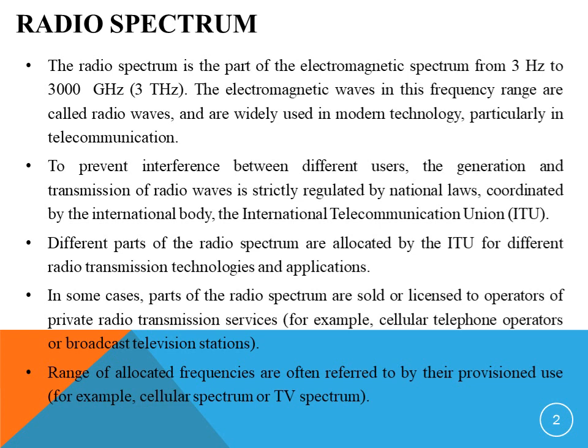ITU has control over the radio spectrum. They allocate spectrum for different applications based on their needs. Further, different parts of the radio spectrum are sold or given as a license to particular operators of radio transmission services, i.e., to certain cellular telephone operators or broadcast TV services.